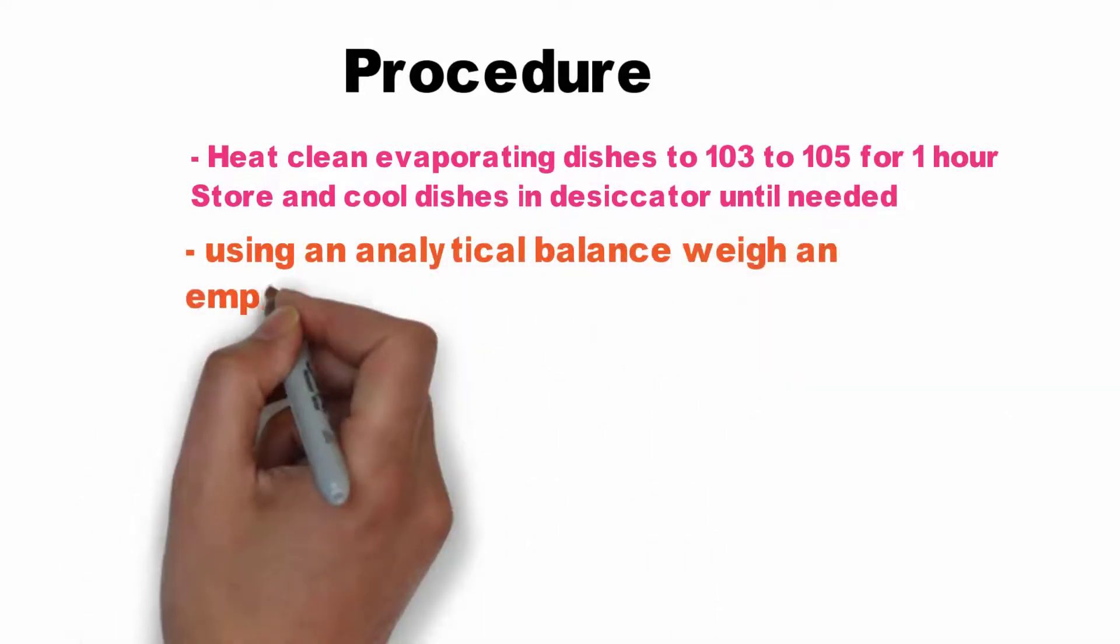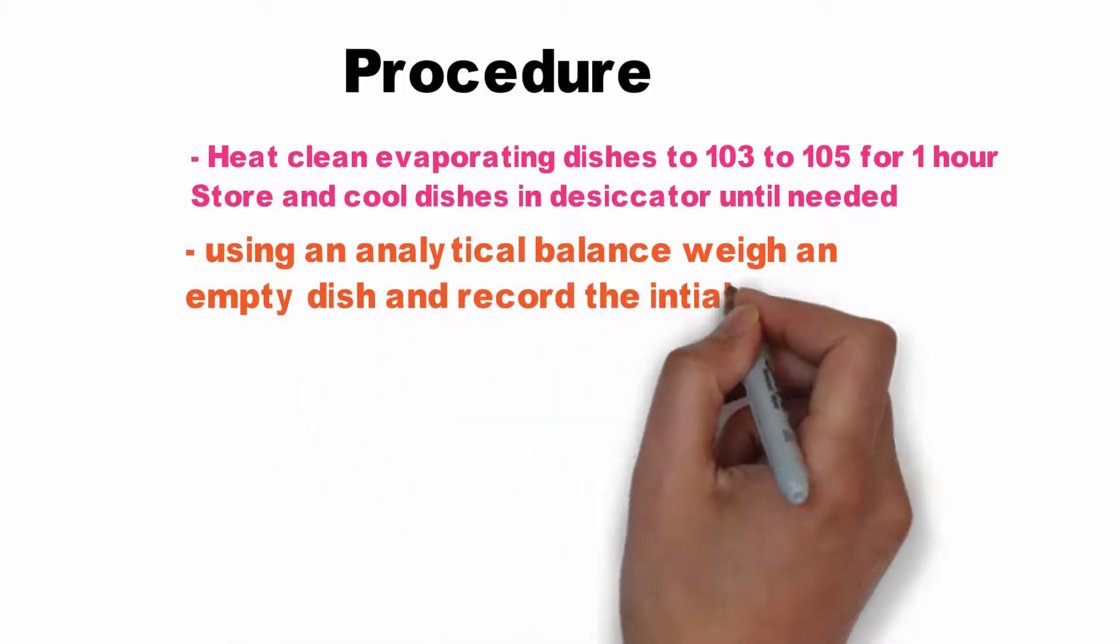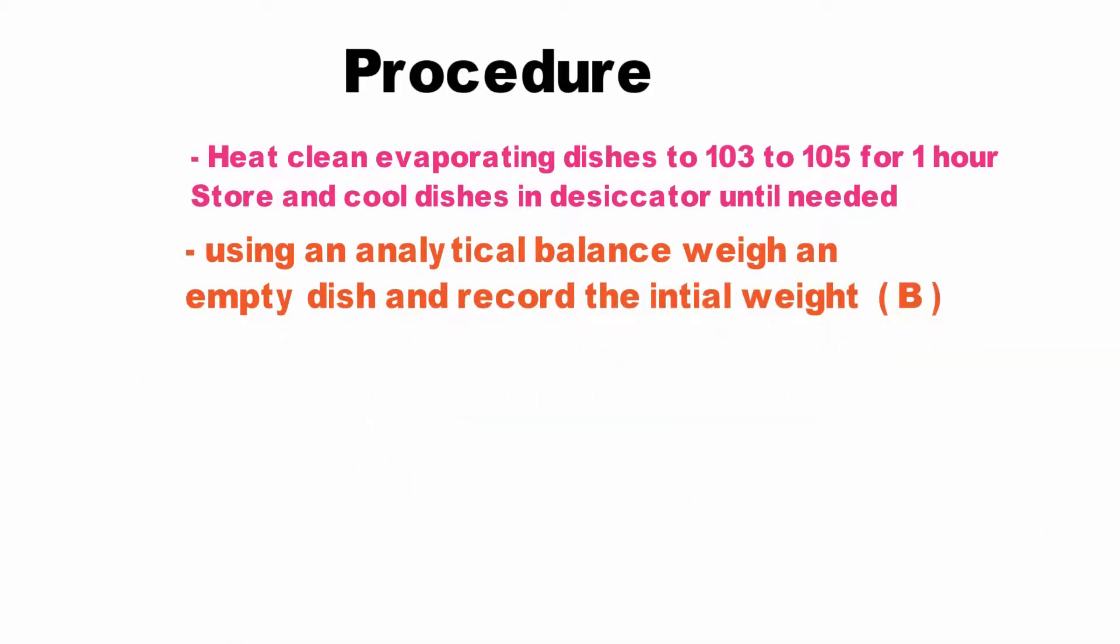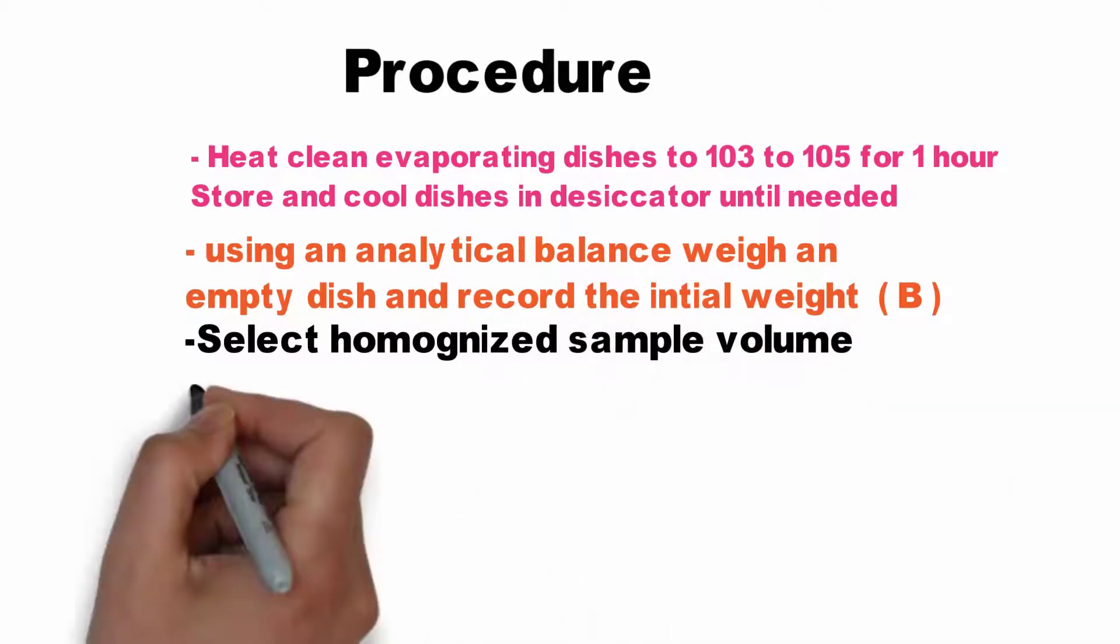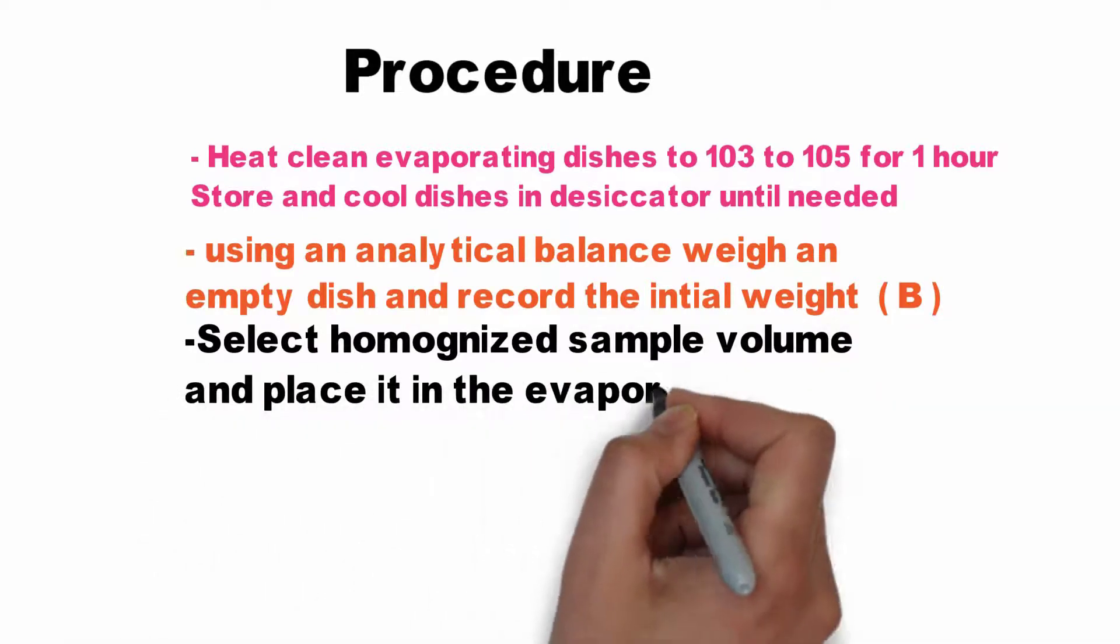Using an analytical balance, weigh an empty dish and record the initial weight. Next, select a homogenized sample volume and place it in the evaporating dish.